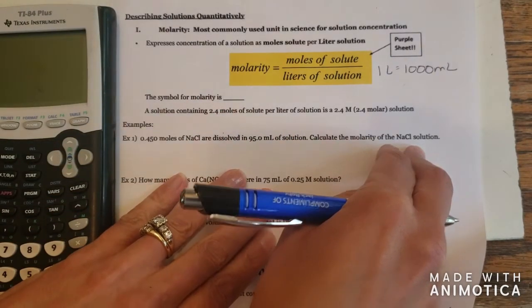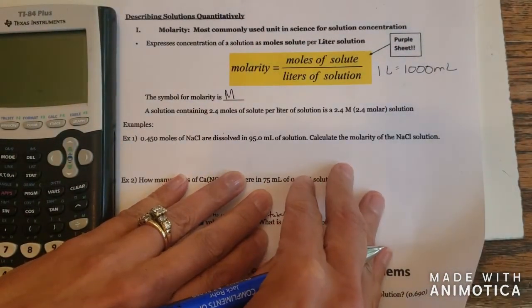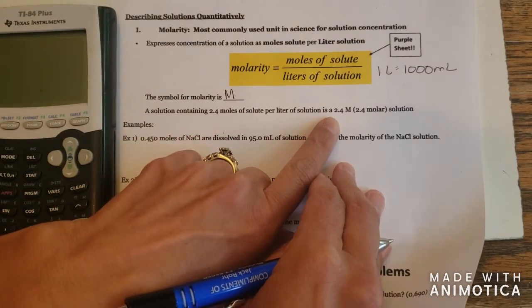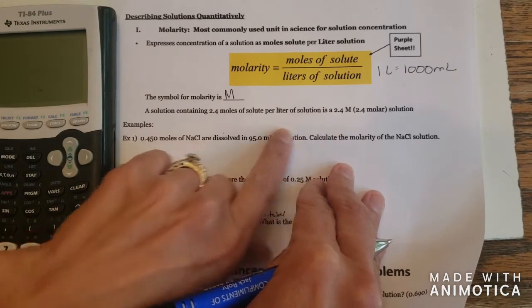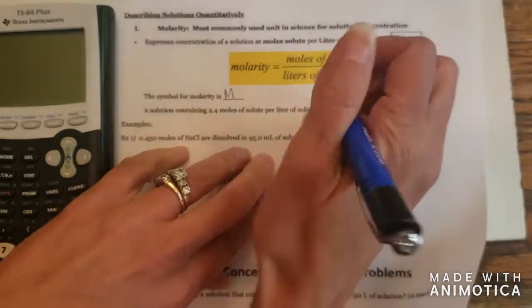So the symbol for molarity is a capital M, not a lowercase m, but a capital M. So when we say that a solution is a 2.4 molar, that means that there are 2.4 moles of solute per liter of solution.